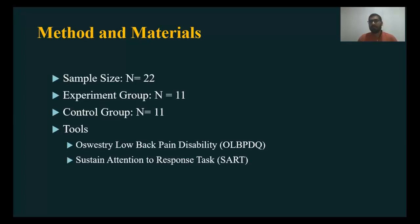For this study, we had 22 patients and randomly divided them into two groups — the experimental group and the control group — each with 11 patients. Before the intervention, we took two parameters: the Oswestry Low Back Pain Disability Questionnaire, which is a subjective parameter assessing pain, and the Sustained Attention to Response Task, which is an objective parameter assessing sustained attention.